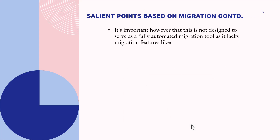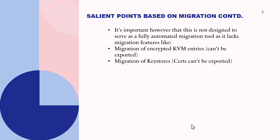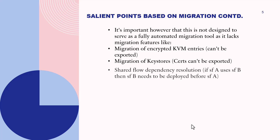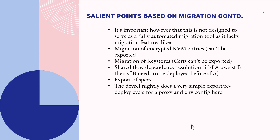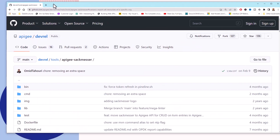It's important to note that SackMessor is not designed to serve as a fully automated migration tool, as it lacks migration features like migration of encrypted KVM entries — key value map entries can't be exported — and migration of key stores and certificates also can't be exported. Shared flow dependency resolution has to be done manually: if shared flow A uses shared flow B, then B needs to be deployed before shared flow A. The devrel GitHub source code at apg/devrel provides an export-redeploy cycle for proxy and environment configuration.